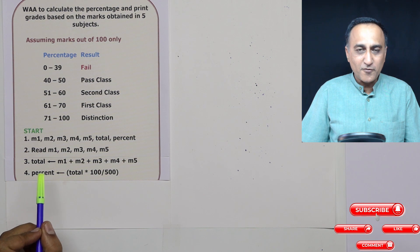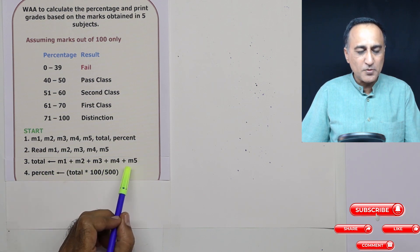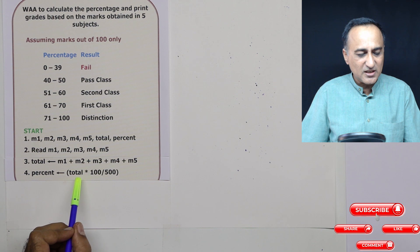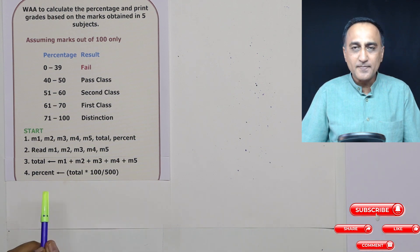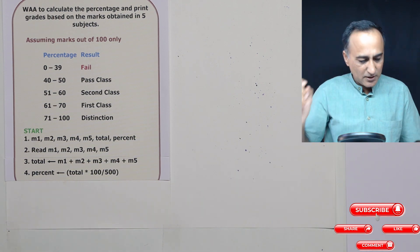Now, for 500, the student has got so many marks, for 100 he's got how much? So percentage is total times 100 divided by 500. So it will give you the percentage.